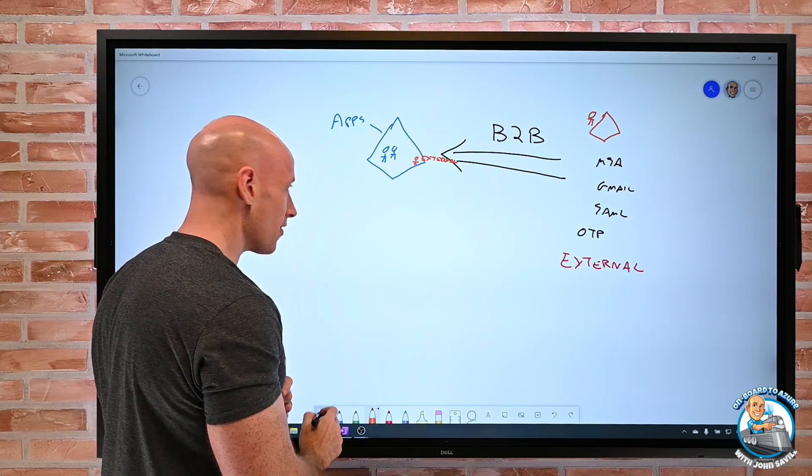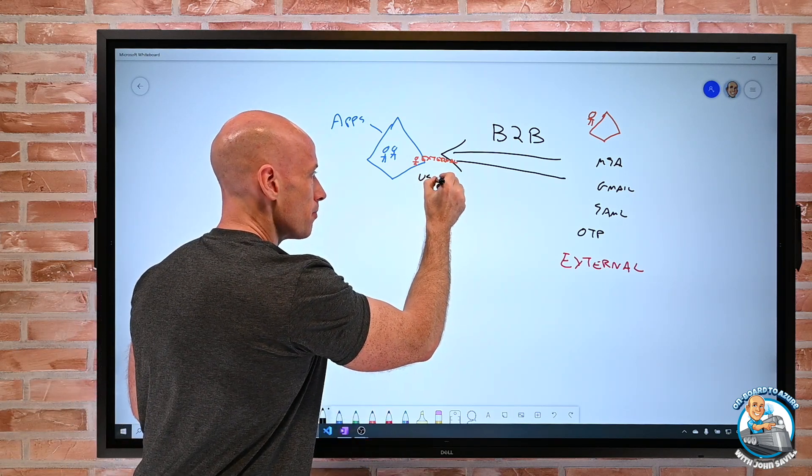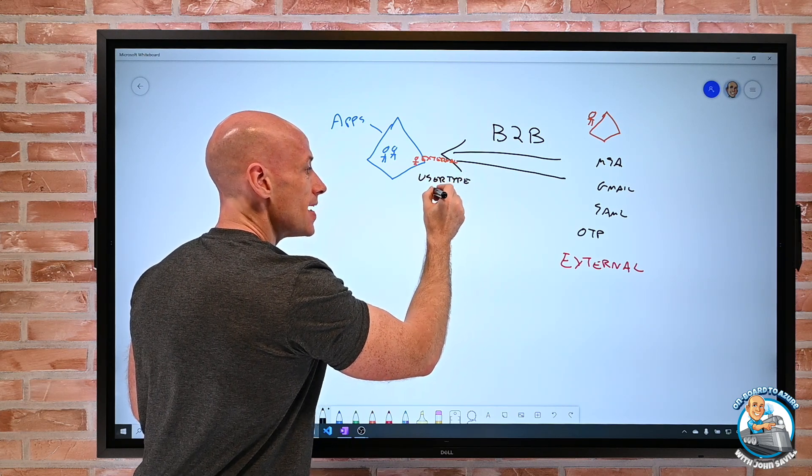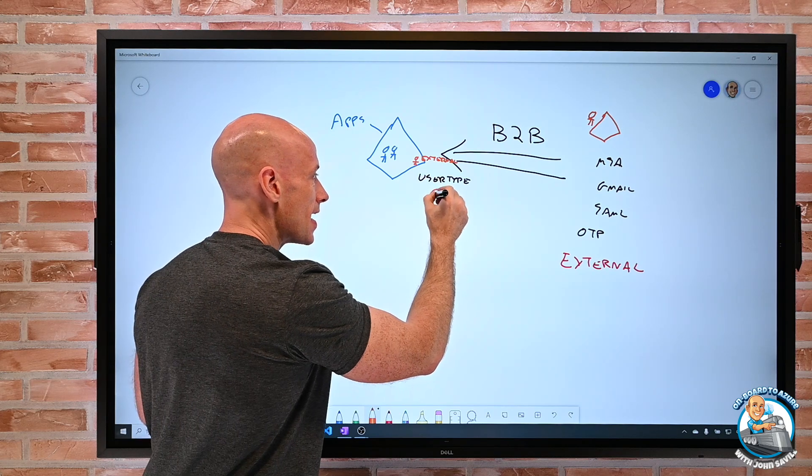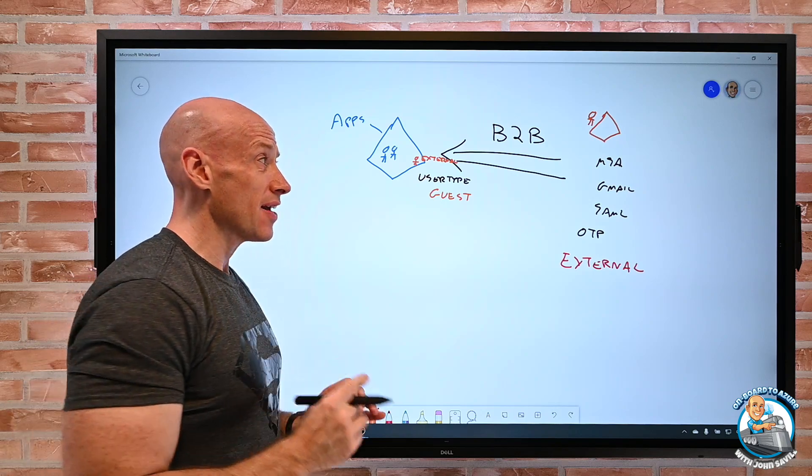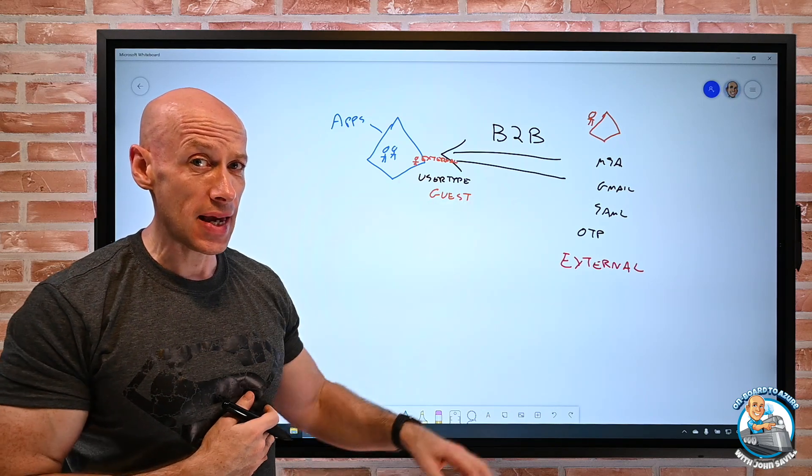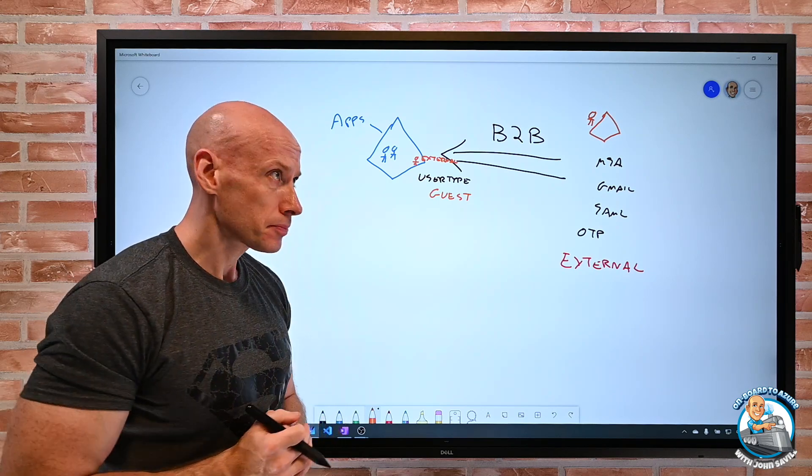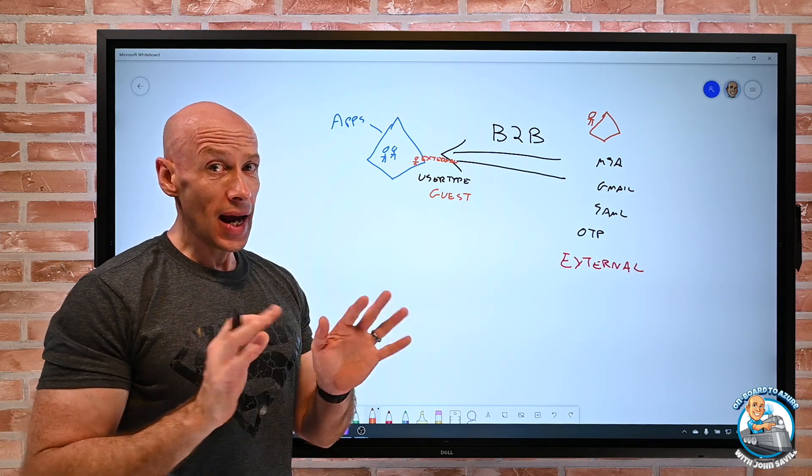Additionally there's another attribute. There's something called a user type. And this is going to be guest. Now we often think they're one and the same thing. Hey if you're external, if you're B2B, you're a guest. And that's true initially. But technically they don't have to be.